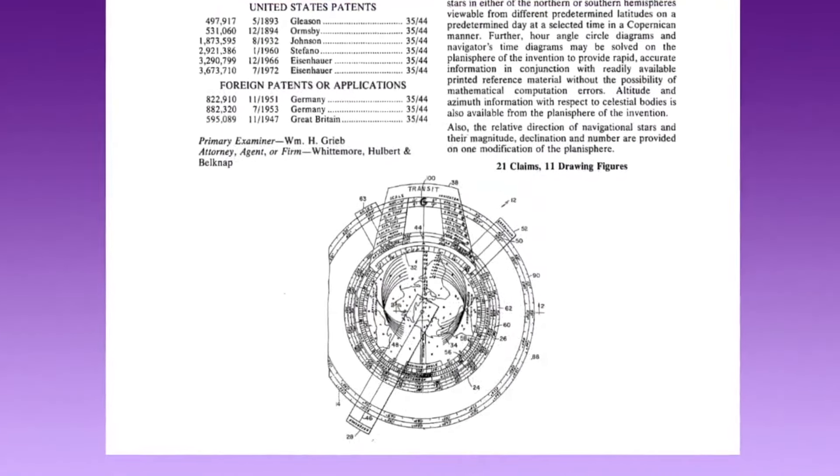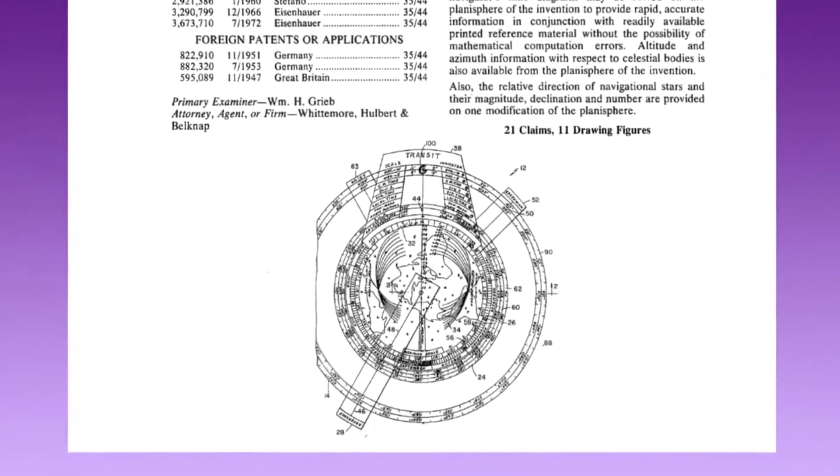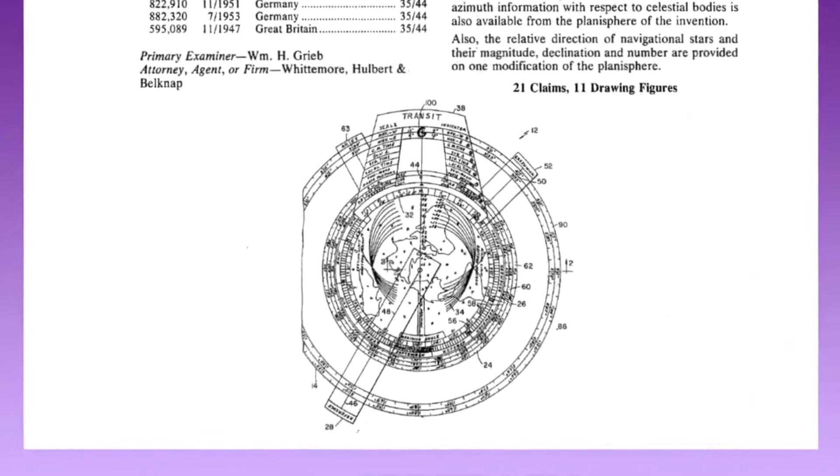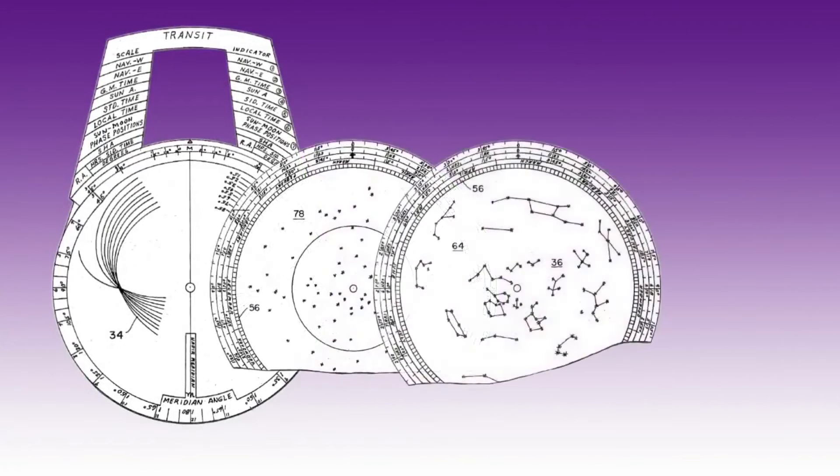It looks rather complicated, so let's simplify it a little. Essentially, it's a series of disks that are riveted together so they can rotate over each other. The principal disks show the sun and the moon positions in the sky, and two disks show the principal stars and constellations in the night sky.